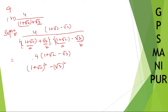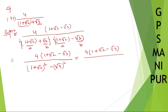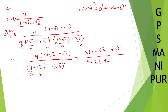Writing this out: the numerator is 4(1 plus root 2 minus root 3), and the denominator uses the formula (a plus b)² = a² plus 2ab plus b². So the denominator expands as: 1 squared plus 2 times 1 times root 2 plus root 2 whole square, minus root 3 whole square.